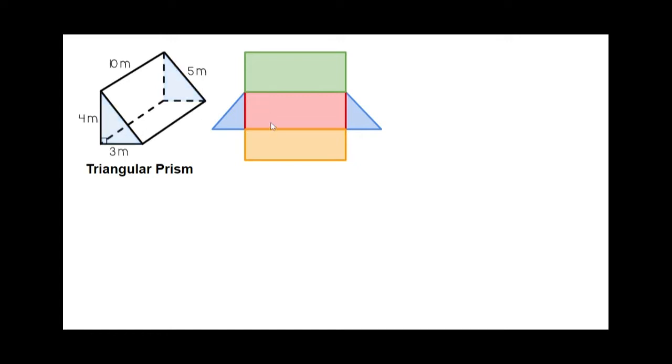How many rectangles you ask yourself? Depending upon your base shape. Since a rectangular prism had four sides, it had four rectangles coming off of it. Our triangular prism has three sides for my base shape. So it's going to have three rectangles coming off of it.